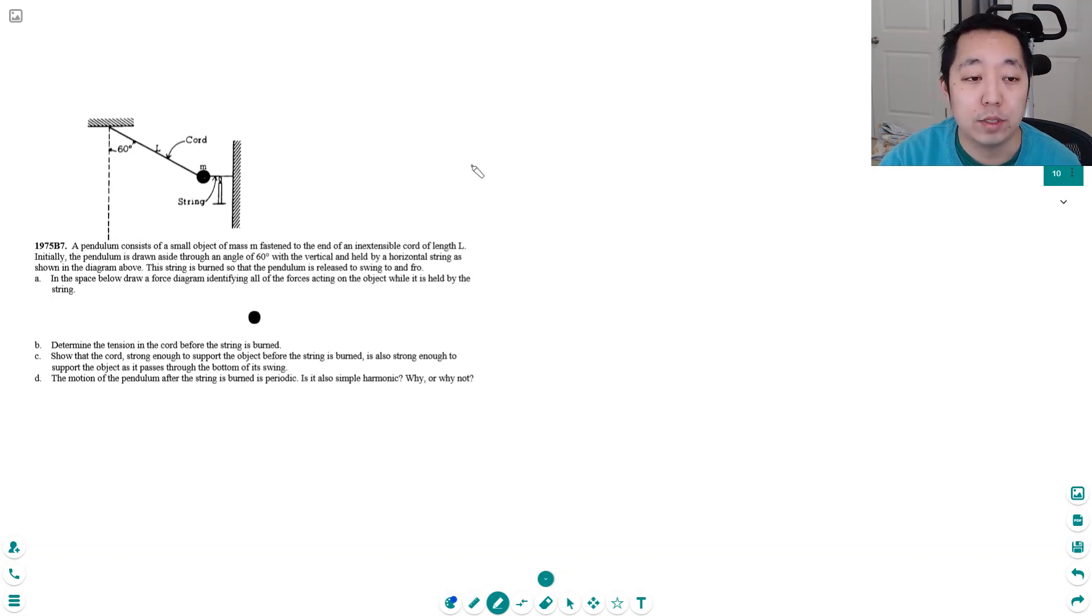We have a pendulum that consists of a small object of mass M fastened to an end of an inextensible chord of length L. Initially, the pendulum is drawn aside through an angle 60 degrees with the vertical, held by a horizontal string shown in the diagram above. The string is burned so the pendulum swings to and fro.